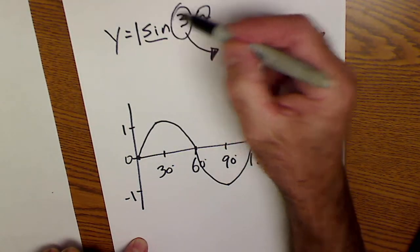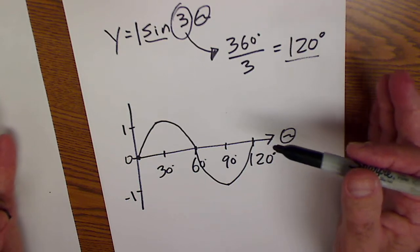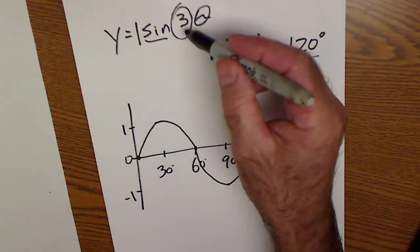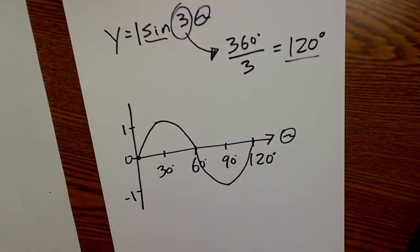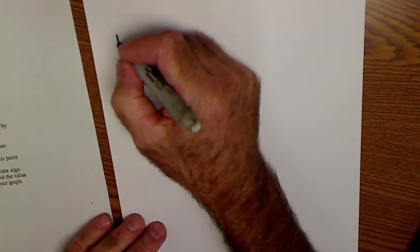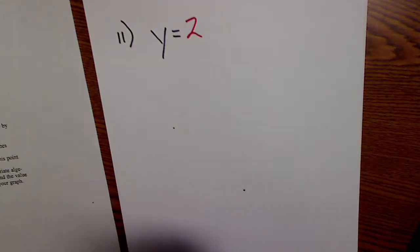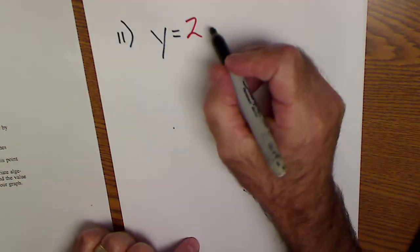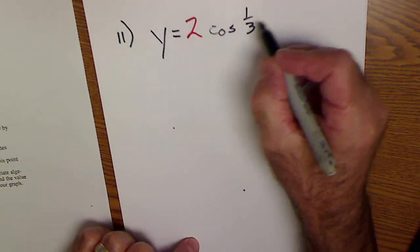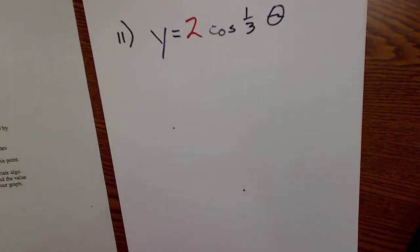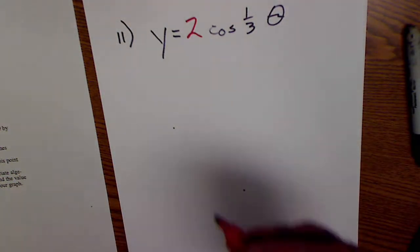So this value right here takes the overall period and cuts it by 3. Let me just do one more problem, where I'll put all those pieces together. This is number 11. So y is equal to 2. That's an amplitude. Cosine of 1 third theta. So the first thing I'll do is label this 2 as an amplitude, and we'll label it on my y-axis that I'm going up to and down to negative 2.